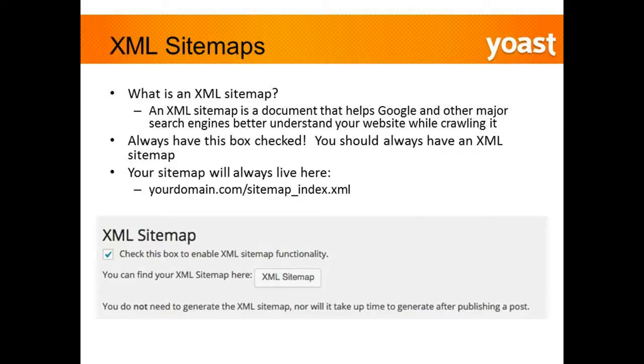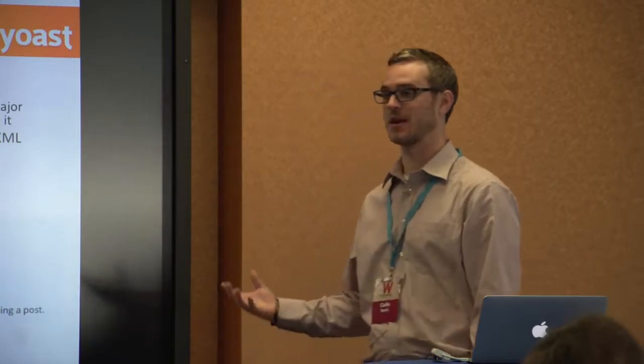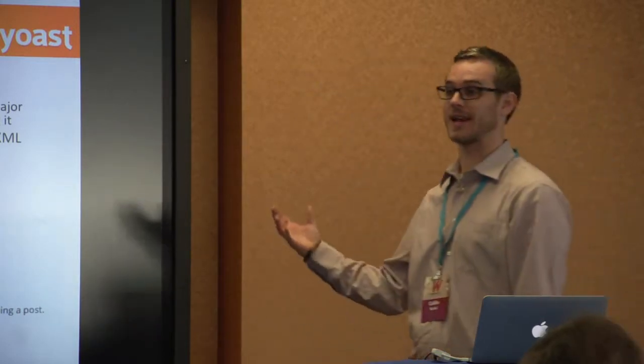XML sitemaps are probably the most beneficial thing you can do. If you have WordPress, there's a good chance you already have one, but making sure it's set up properly is imperative. An XML sitemap is simply a document that helps Google understand all the pages on your website — it's essentially an outline that tells them all these pages are connected, so they can hop from page to page and discover all of your content.